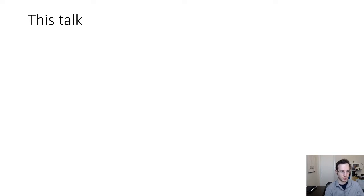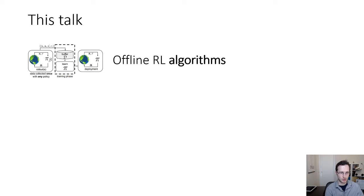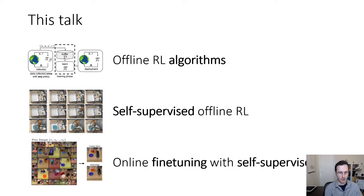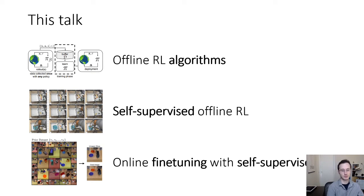Here are the particular projects I'll discuss in this talk. I'll first talk about the foundations of offline RL algorithms so we have the algorithmic basis for what comes next. Then I'll talk about self-supervised offline RL with goal conditioning and large-scale experiments at Google. Finally, I'll talk about something more forward-looking: online fine-tuning with self-supervised RL, where an agent performs offline self-supervised learning, then additional online exploration in a new domain, and then performs desired tasks even in zero shot.